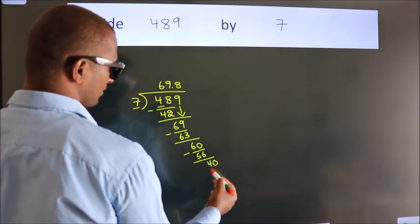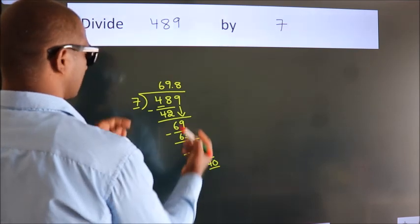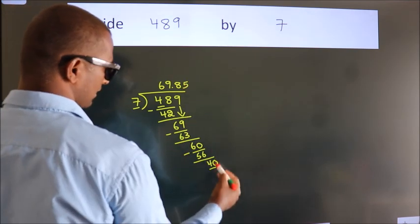So directly take 0. So 40. A number close to 40 in the 7 table is 7 times 5, which is 35.